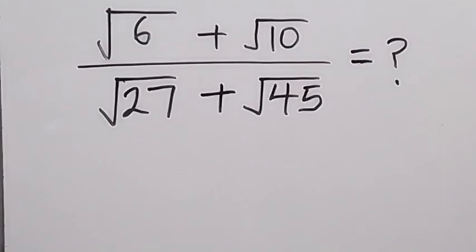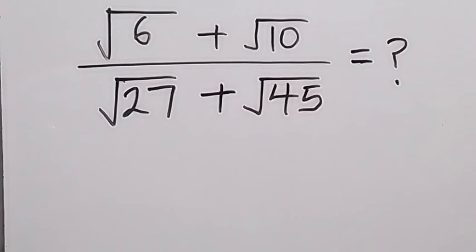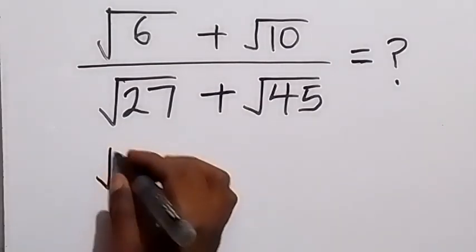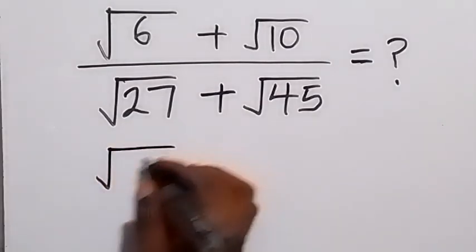Hello, you are welcome. How to simplify this: we have square root of 6 plus square root of 10 divided by square root of 27 plus square root of 45.